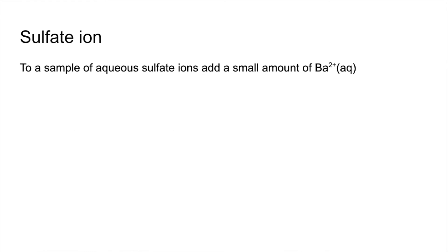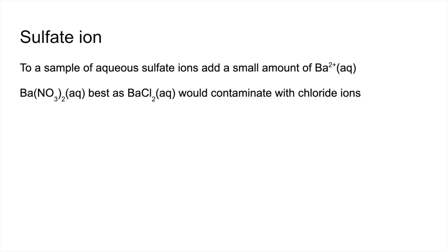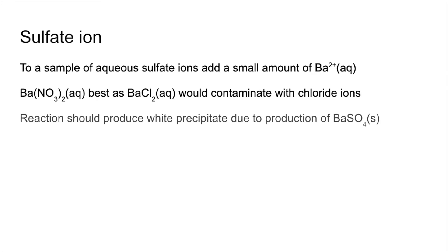For the sulfate ion, add a small amount of aqueous barium-2 ions to your sample. Barium nitrate is preferable since barium chloride could contaminate with chloride ions. The reaction produces a white precipitate of barium sulfate, which is insoluble. Here's the equation for that.